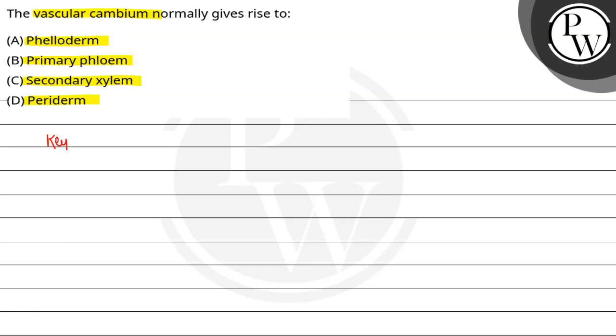So the key concept here is vascular cambium. Vascular cambium ek type ka secondary meristem hai. Yarni, ye secondary growth ke liye responsible hai.